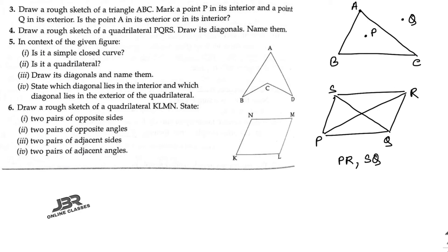Sum number five: in context of the given figure, is it a simple closed curve? Yes, definitely. Is it a quadrilateral? A quadrilateral means four sides — one, two, three, four — yes, definitely. Draw its diagonals and name them. AC is the interior diagonal and BD is the exterior diagonal. AC is the interior and BD is the exterior diagonal.